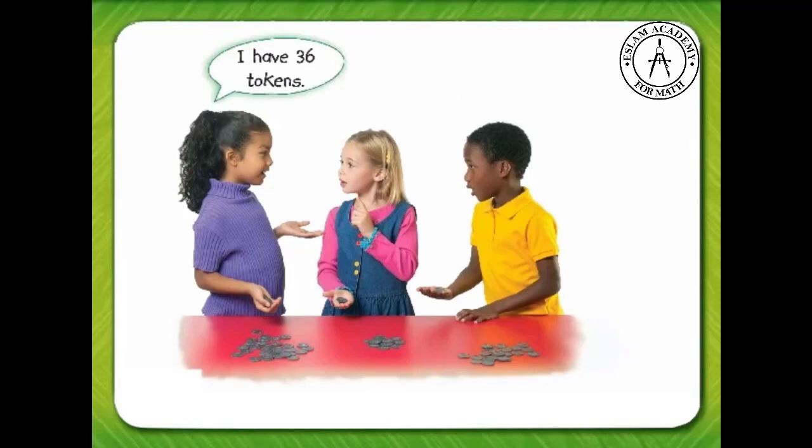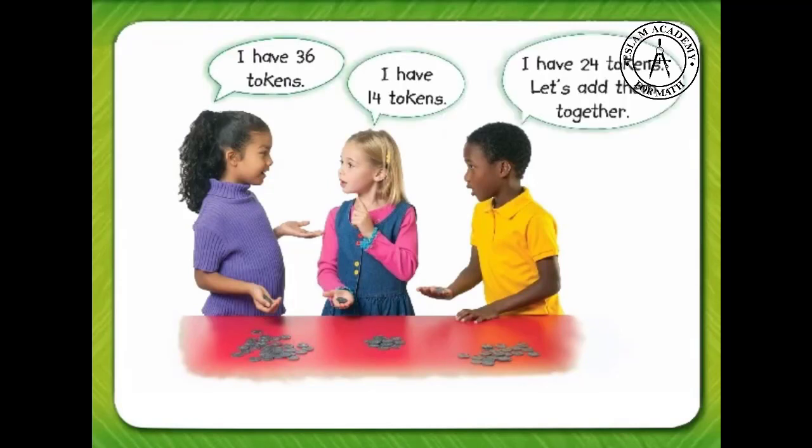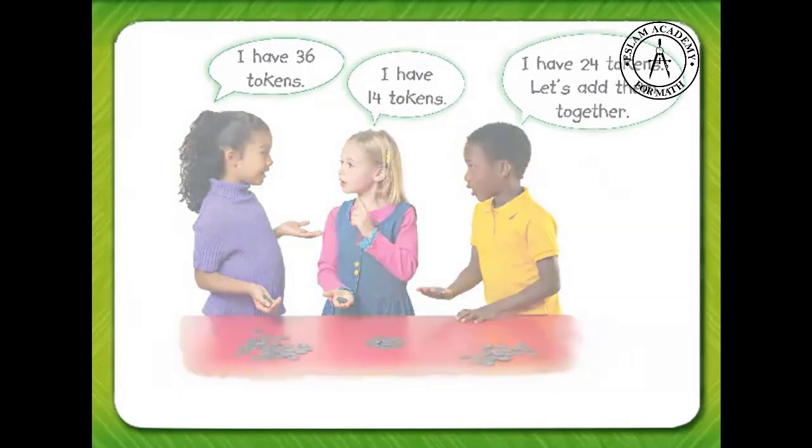I have 36 tokens. I have 14 tokens. I have 24 tokens. Let's add them together. So, we need to find 36 plus 14 plus 24.